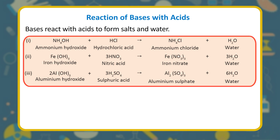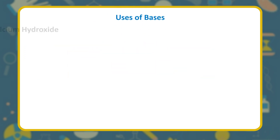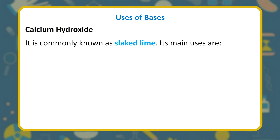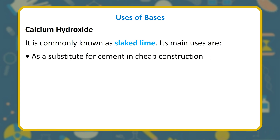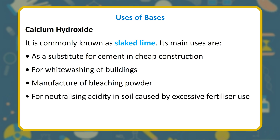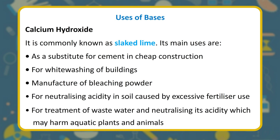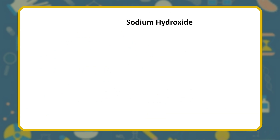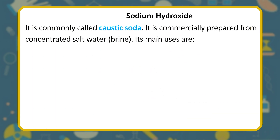Uses of calcium hydroxide (slaked lime): as a substitute for cement in cheap construction; for whitewashing of buildings; manufacture of bleaching powder; neutralizing acid in soil caused by excessive fertilizer use; and for treatment of wastewater to neutralize its acidity, which may harm aquatic plants and animals.